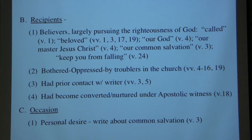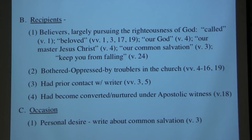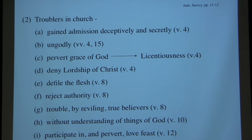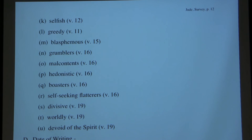They had had prior contact with the writer, according to verses 3 and 5, and had become converted or nurtured under apostolic witness — 'remember, beloved, the predictions of the apostles of our Lord Jesus Christ, how they said to you.' The occasion was a personal desire to write about common salvation, but also the presence of these ungodly in the church. The date of writing may have been sometime after the age of the apostles, given verse 17: 'remember the predictions of the apostles' — at least sometime after the ministry of the apostles, or at least some of them, to the readers of the epistle.